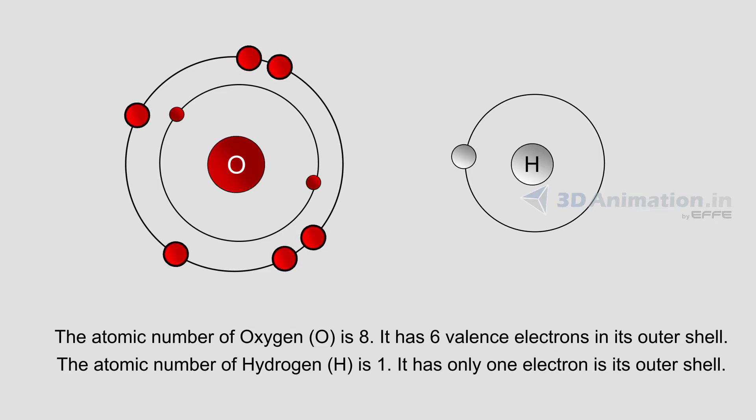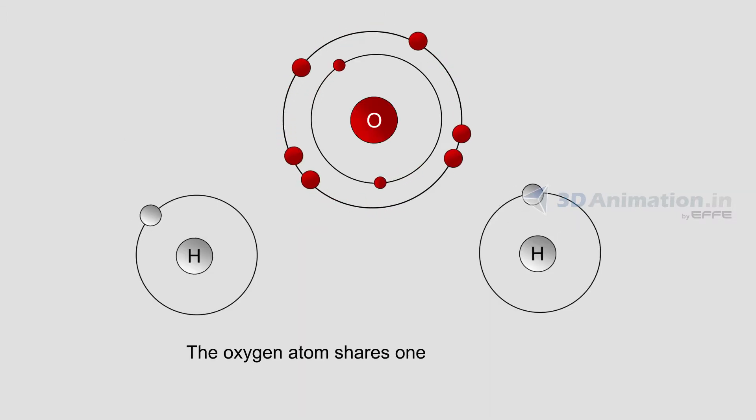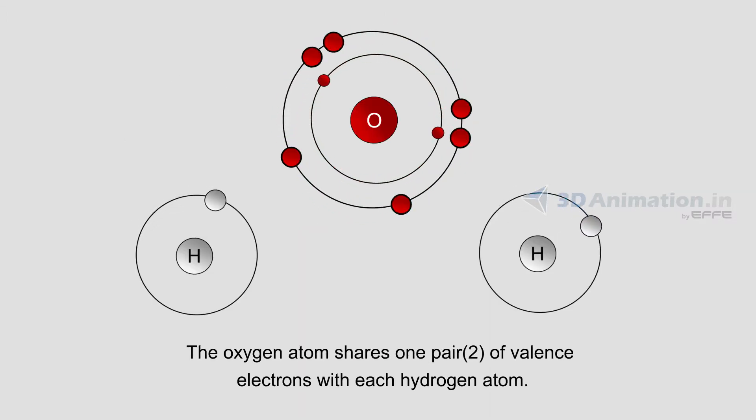The atomic number of hydrogen is one. It has only one electron in its outer shell. The oxygen atom shares one pair of valence electrons with each hydrogen atom.